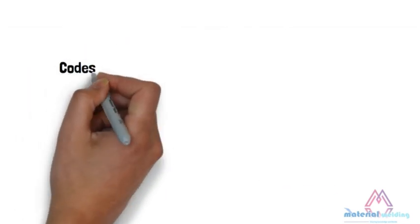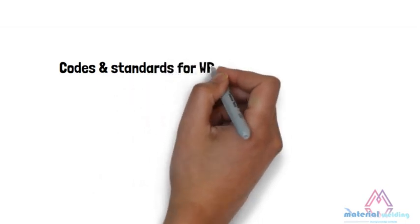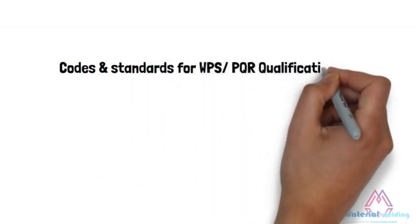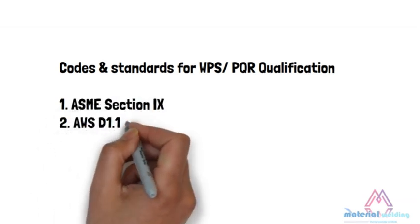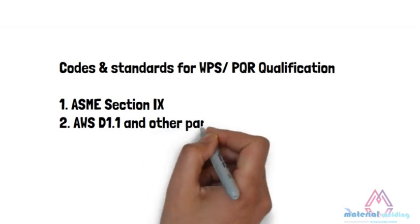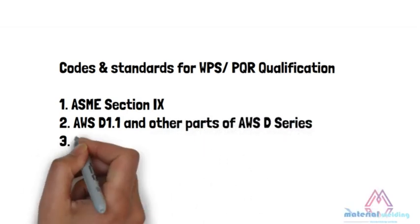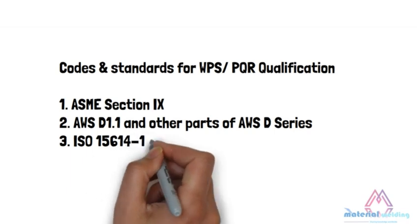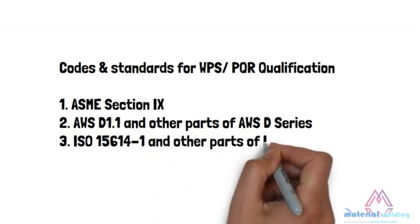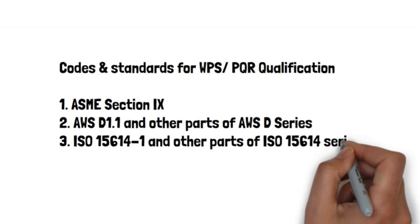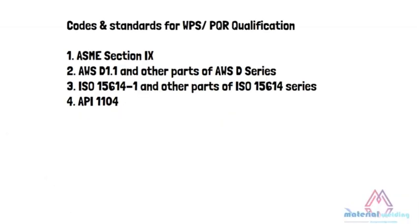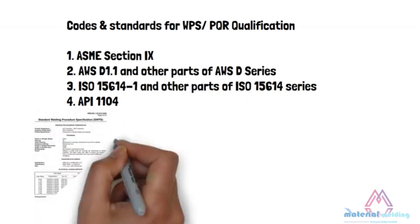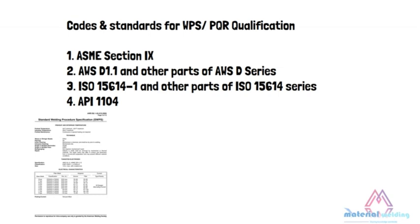There are various codes and standards used for WPS and PQR qualification. First, ASME Section 9. Second, AWS D1.1 and other parts of the AWS D series. Third, ISO 15614 Part 1 and other parts of the ISO 15614 series. Fourth, API 1104. The purpose of all of the above is to provide a qualification for a welding procedure which shall ensure welding quality and repeatability.